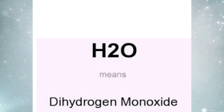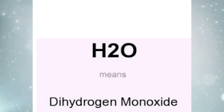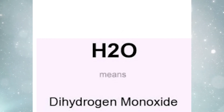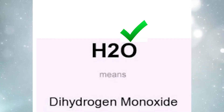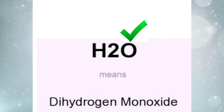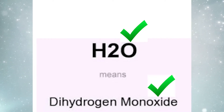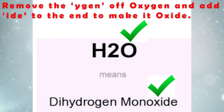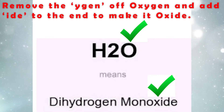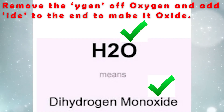For example, in H2O, the oxygen atom is on the right of the chemical formula and would go from being oxygen to oxide. Notice that we remove the YGEN and add IDE at the end.